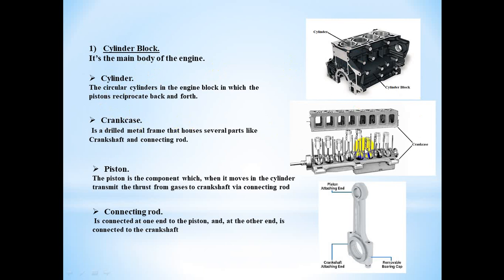Number two: the crankcase. The crankcase is a drilled metal frame that houses several parts, like the crankshaft and connecting rod. It is located below the cylinder block. Its main function is to shield the crankshaft and connecting rod from debris. The crankcase is made of aluminum.